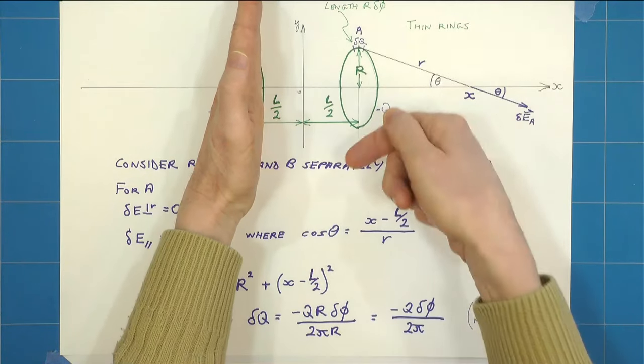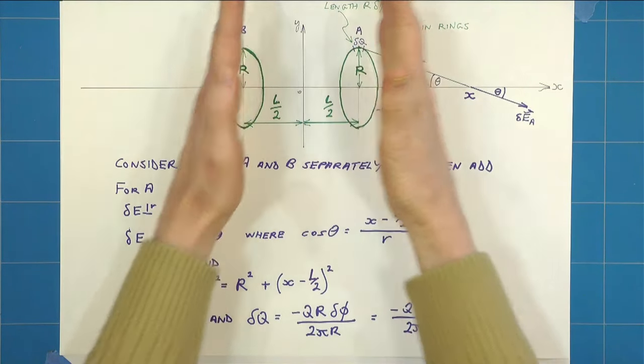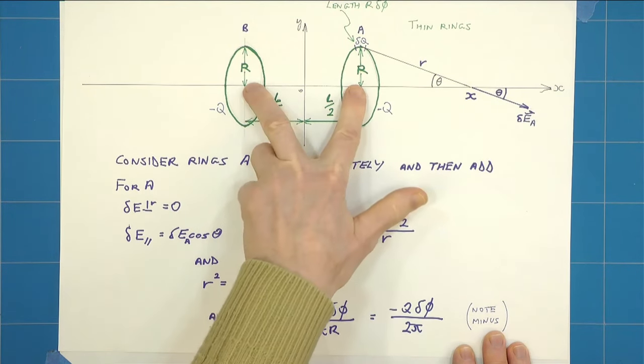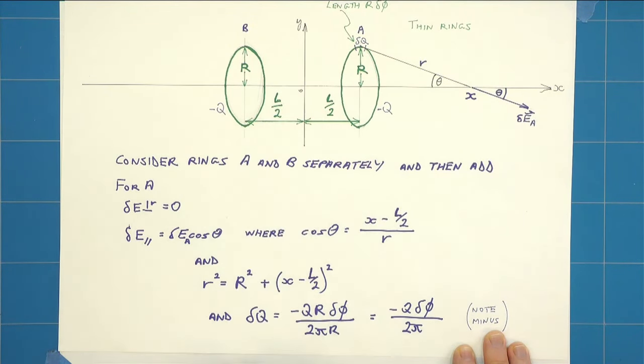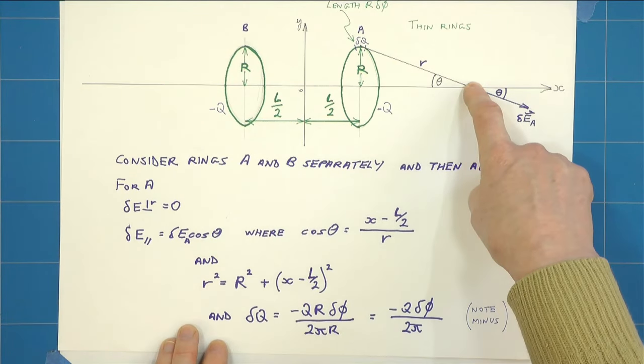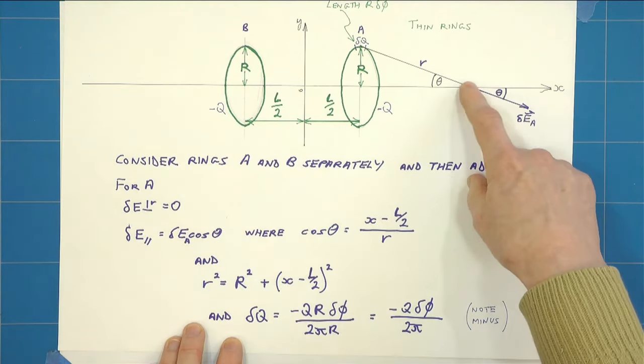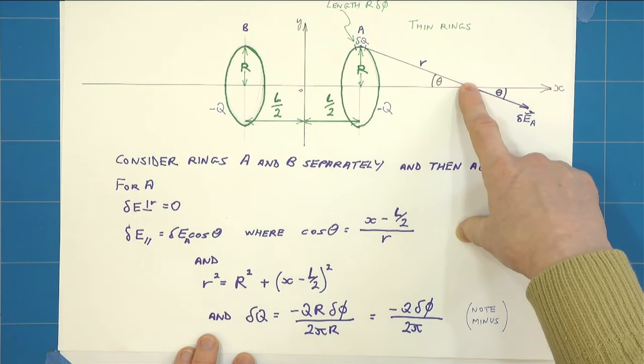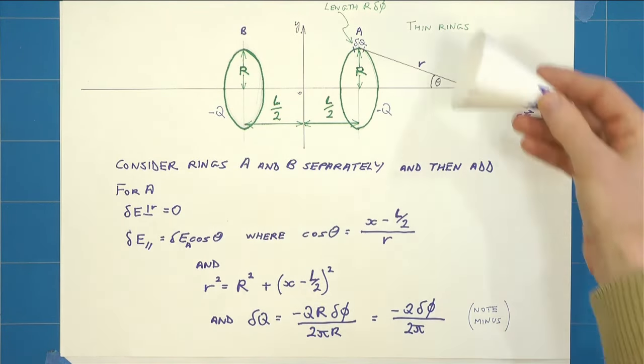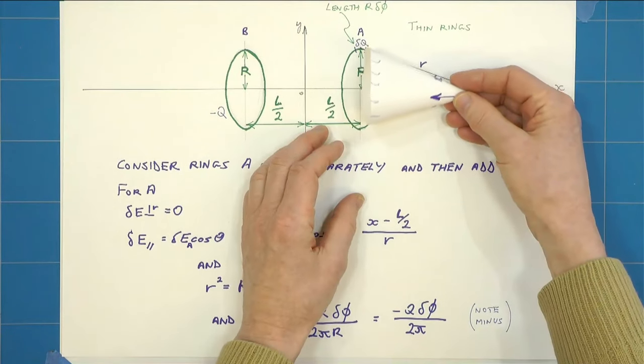They're actually like this, perpendicular to the paper. I've just drawn them like that so you can see what's going on. They're a distance L apart, that's the origin, and I'm choosing some point x on the x-axis where we want to determine what the electric field is.